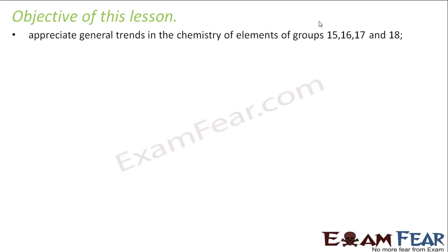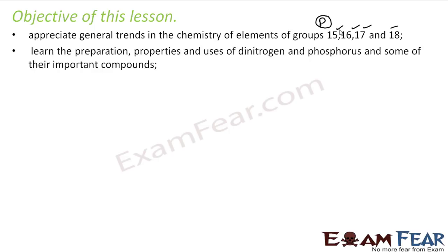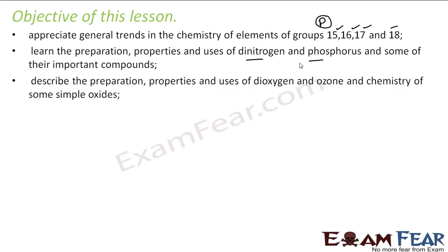We will study P-Block Elements — specifically groups 15, 16, 17, and 18. Group 13 and 14 we have already studied in the previous class. We will learn how to prepare Dinitrogen and Phosphorus and some properties of their important compounds. We will also describe the preparation, properties, and use of Dioxygen and Ozone, and the chemistry of simple oxides.